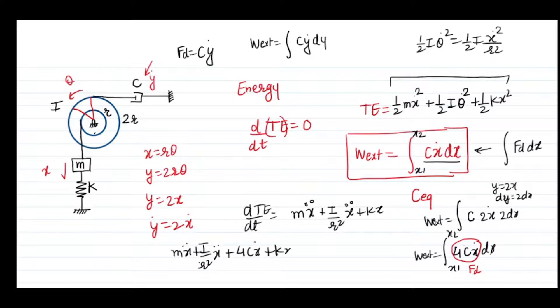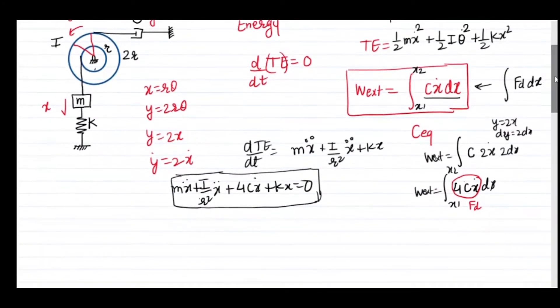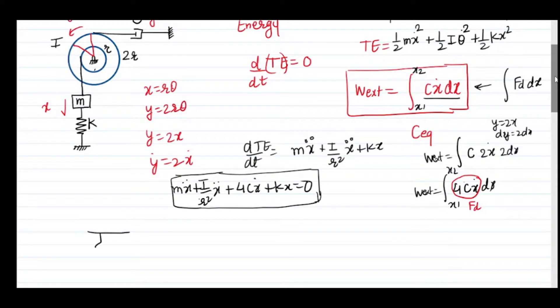This is how we can write the equation of motion of the system by considering the energy approach. It looks a little bit off track because we have to consider the damping part separately, but this is also a very helpful method. You have to keep in mind that you have to use all the parameters as a single variable - either use X, Y, or theta. I changed Y in terms of X and then wrote this entire expression. If you compare this with our previous expression, these two are exactly the same.